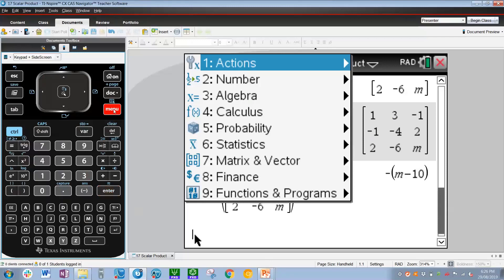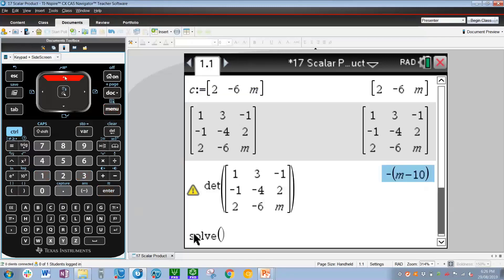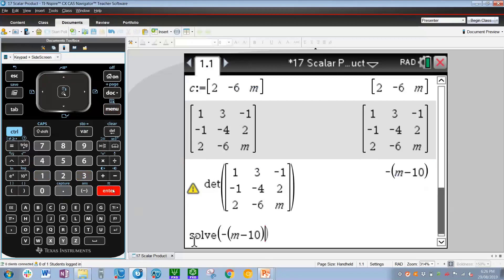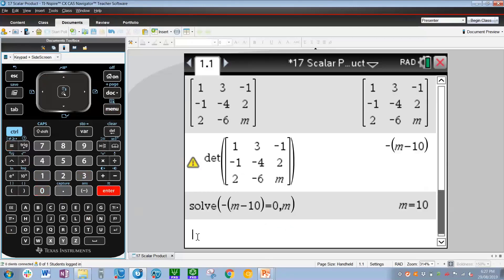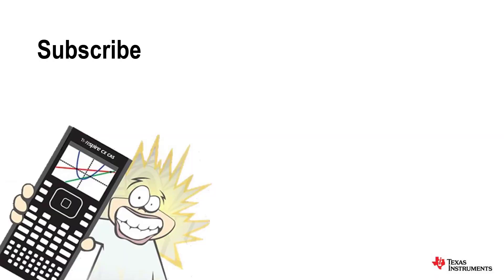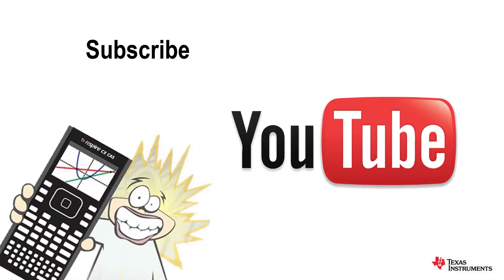So solving for m, menu 3, 1. To be linearly dependent, the determinant must equal zero. So copying and pasting the determinant, making it equal zero, comma m, solving for m. And there we go. We get m=10. So at this stage, you can, of course, plug in m=10 back into vector c and show that the vectors are certainly linearly dependent.